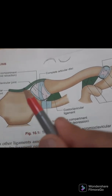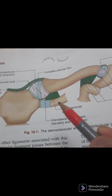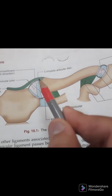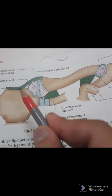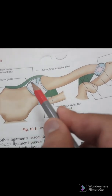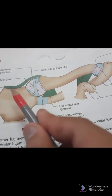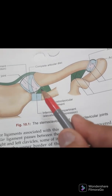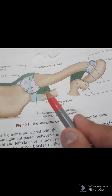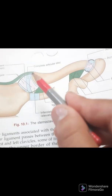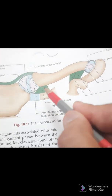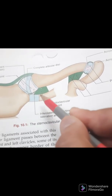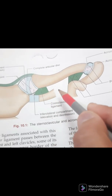You can see in the diagram the interclavicular ligament and the costoclavicular ligament. The interclavicular ligament passes between the sternal ends of the right and left clavicle, with some fibers attached to the upper border of the manubrium sterni. The costoclavicular ligament attaches to the medial end of the clavicle superiorly, and inferiorly to the first costal cartilage and the first rib.